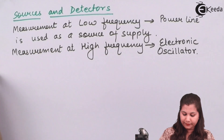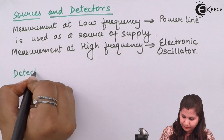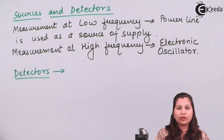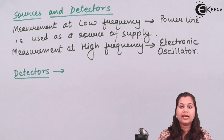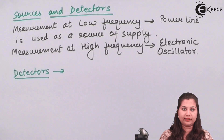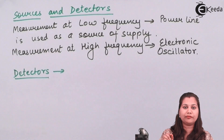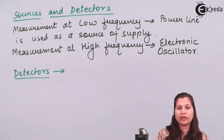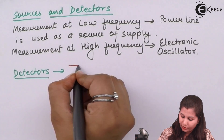If we are working at a single constant frequency, it is more suitable to use a tuned detector, because a tuned detector gives maximum sensitivity at that specified frequency and also reduces disturbance due to harmonic frequencies. So in the case of detectors, we are talking about tuned detectors.